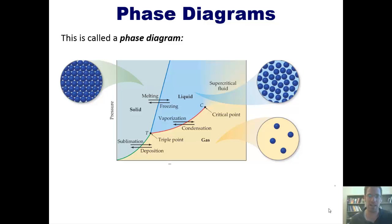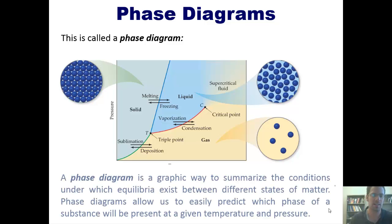This picture is called a phase diagram. It has lots of cute little words, colors, and fancy arrows. But what do they mean? Well, a phase diagram is a graphical way to summarize the conditions under which equilibria exist between different states of matter.